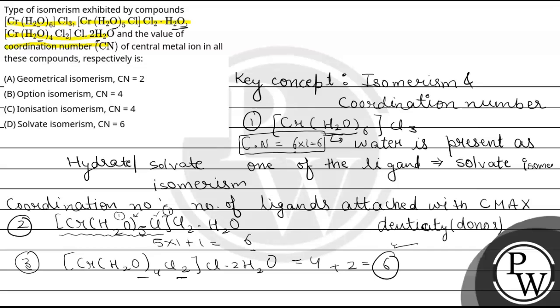So the final answer is option D, which states solvate isomerism and the coordination number of every compound is six. I hope you understood it well. Best of luck.